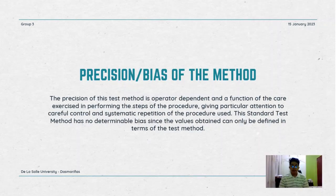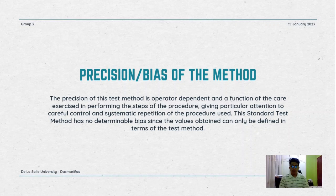The precision of this test method is operator dependent and a function of the care exercised in performing the steps of the procedure, giving particular attention to careful control and systematic repetition. No standard soils exist for determination of the overall precision of this test method under field conditions. While no formal round-robin testing has been completed, it is estimated by subcommittee D18.08 that the results of two properly conducted tests by a skilled operator on the same material should not differ by more than approximately 1 pound per cubic foot or 1.6 kilograms per cubic meter. Tests performed by unskilled operators would be expected to yield substantially greater differences. Therefore, this standard test method has no determinable bias since the values obtained can only be defined in terms of the test method.